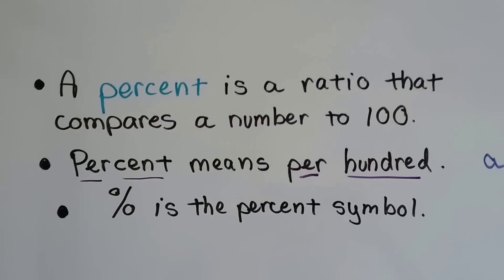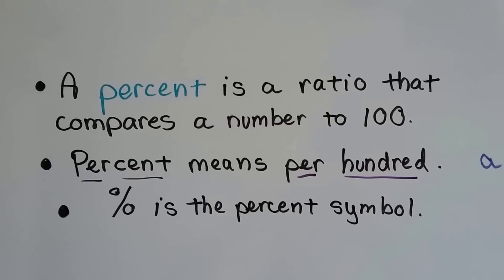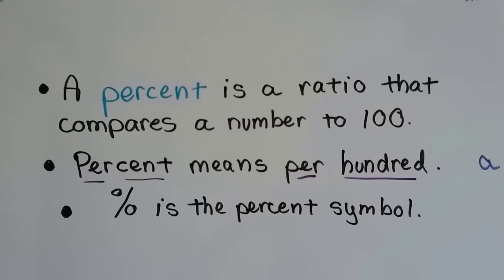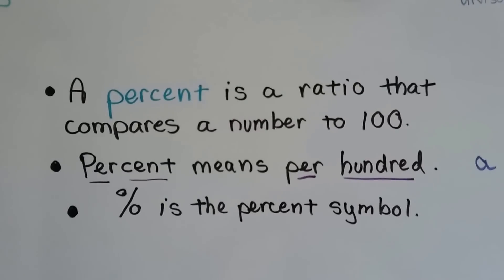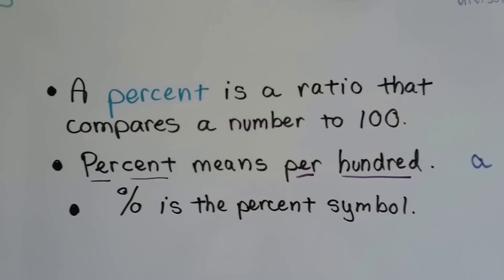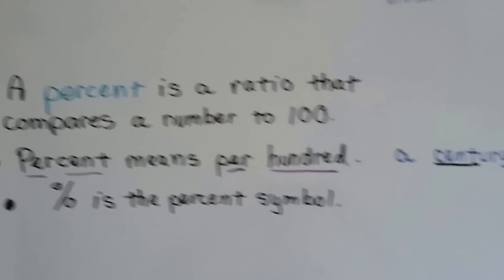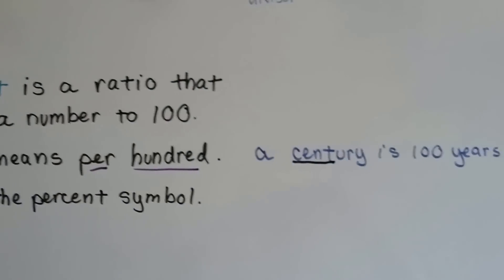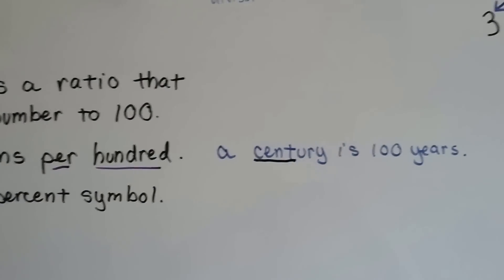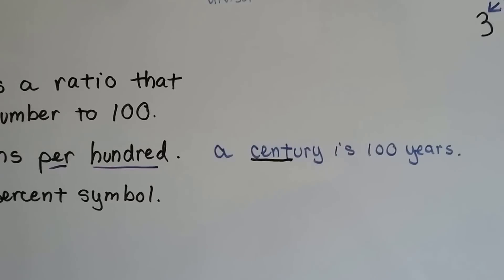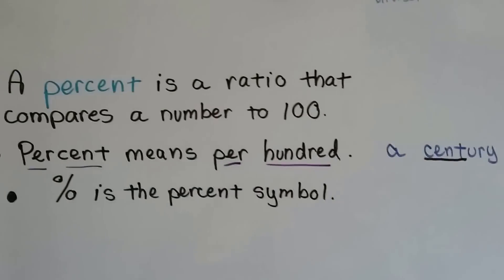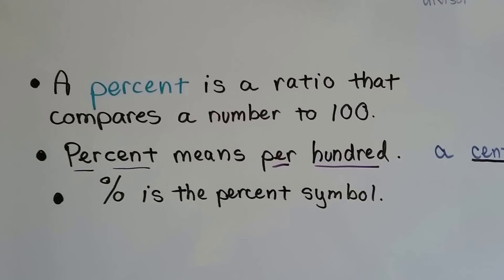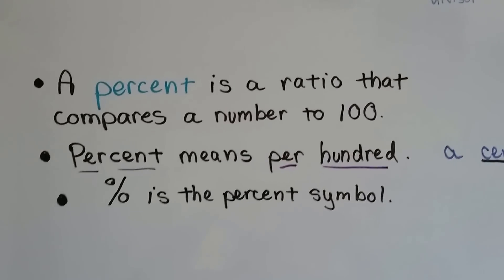A percent is a ratio that compares a number to 100. Per cent means per hundred. A century is 100 years — cent means hundred, and per cent means per hundred.